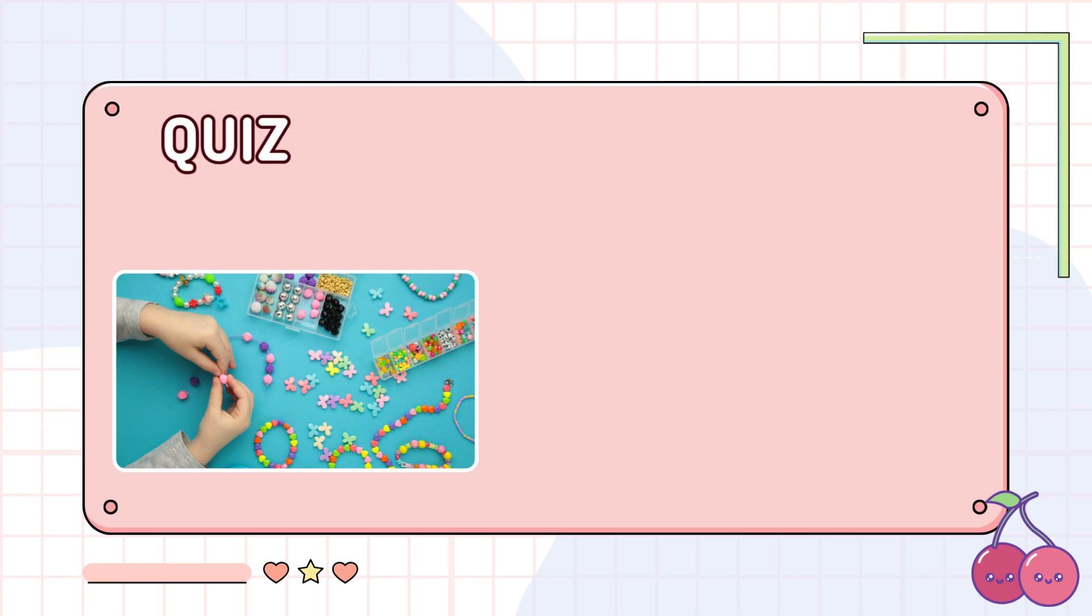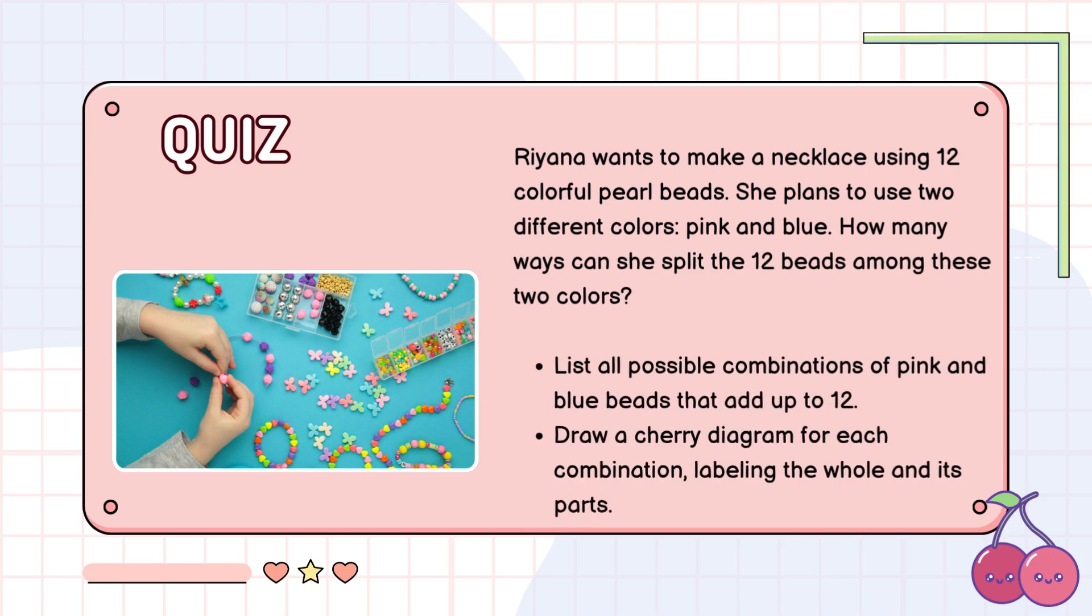Let's put your understanding of the part-whole cherry diagram to the test. Rihanna wants to make a necklace using 12 colorful pearl beads. She plans to use two different colors, pink and blue. How many ways can she split the 12 beads among these two colors? Your Challenge: 1. List all possible combinations of pink and blue beads that add up to 12. 2. Draw a cherry diagram for each combination, labeling the whole and its parts. Remember, the parts might look different in number, but together they always add up to the whole. Have fun exploring the possibilities. Don't forget to share your answers in the comments below.